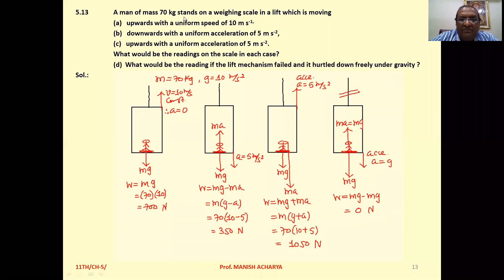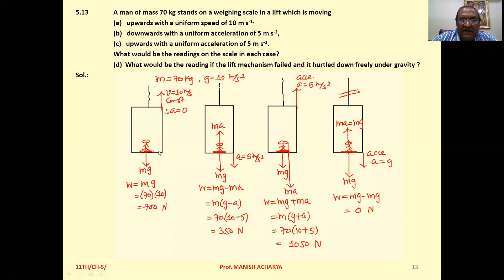Problem 5.30: A man of mass 70 kilograms stands on a weighing scale in a lift. Case A — moving upward with uniform speed of 10 meter per second. This is the lift, this is the weighing scale, person is standing on the weighing scale. Weight of the person is mg downward. Since velocity is constant at 10 m/s, acceleration is zero, so the weight is simply mg = 70 × g = 700 newton.